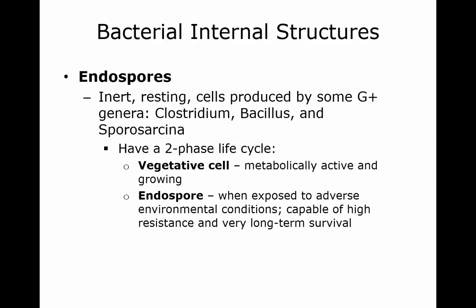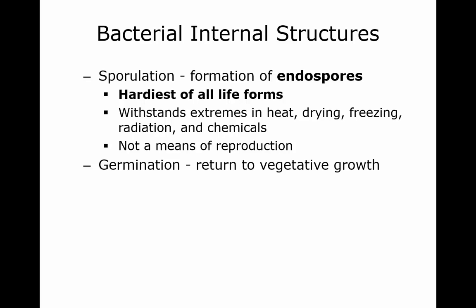Vegetative cells function in reproduction, and all of the medically relevant ones are usually gram-positive. The process of making endospores is called sporulation, and endospores are the hardiest of all life forms. They can withstand extreme heat, extreme dryness, radiation, chemicals, and freezing temperatures. Once the endospore returns to vegetative growth and becomes a vegetative cell, we call that germination.